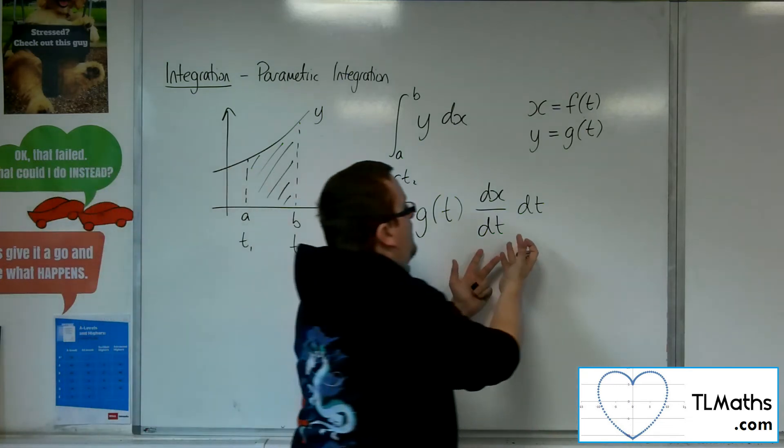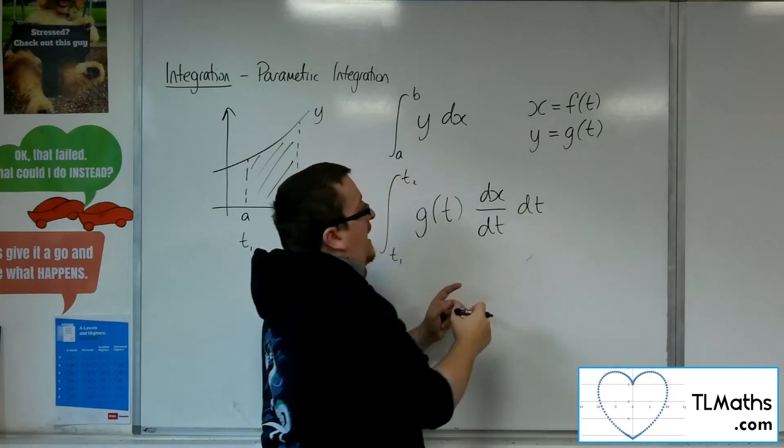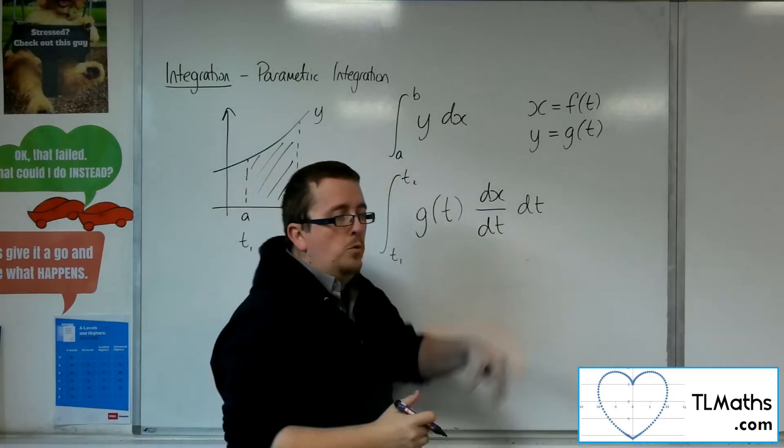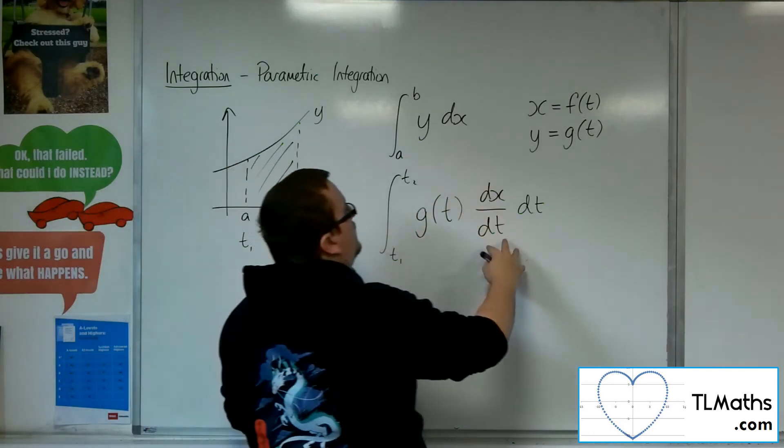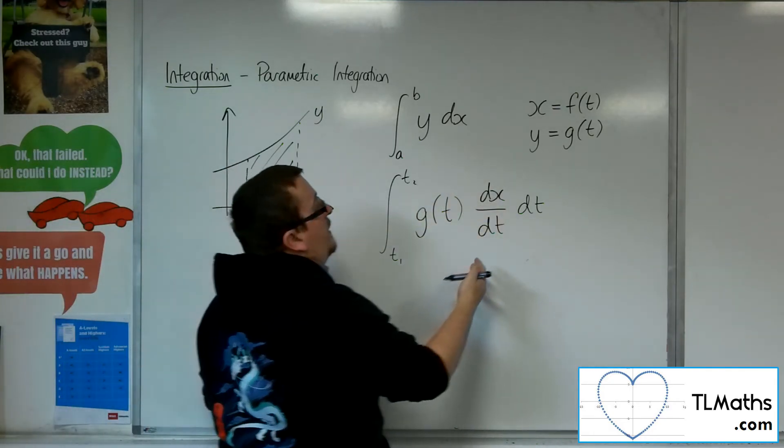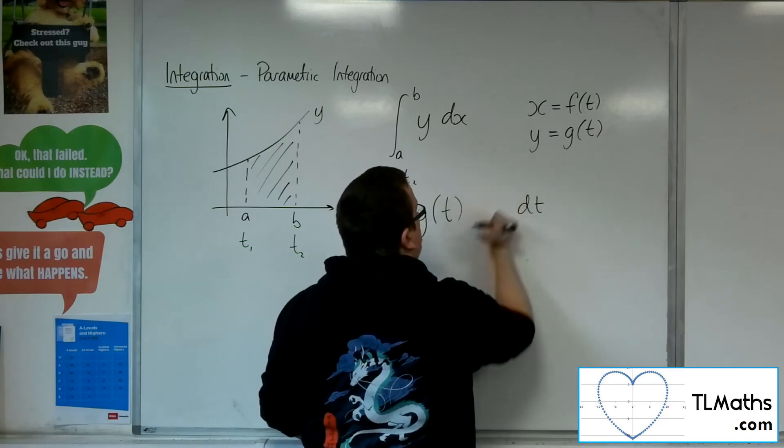Here you can kind of see how the dt's would cancel out, leaving you with a dx. So this is equivalent. So you could rewrite this, the dx by dt, as f prime dt.